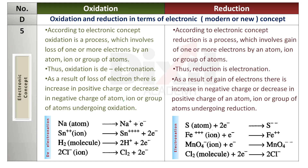According to the electronic concept, reduction is a process which involves gain of one or more electrons by an atom, ion, or group of atoms. Thus, reduction is electronation. As a result of gain of electrons, there is an increase in negative charge, or decrease in positive charge, of the atom, ion, or group of atoms undergoing reduction. In the following examples, sulfur atom, Fe3+ ion, MnO₄⁻ ion, and Cl₂ molecule undergo reduction.